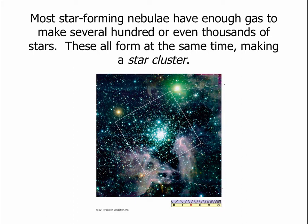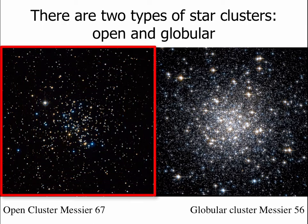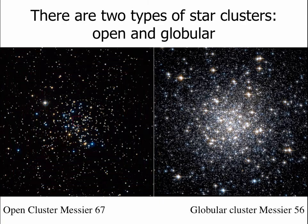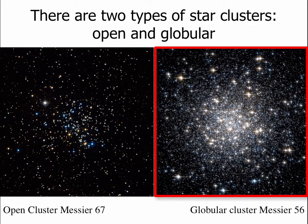The Orion Nebula is in the process of making a new star cluster right now. There are two main types of star clusters. On the left is an open star cluster — not a lot of stars, but more in the center than at the edge. On the right is a globular star cluster, which can have hundreds of thousands of stars. They look just like someone poured a bunch of sugar on a portion of the sky — really gorgeous to look at.